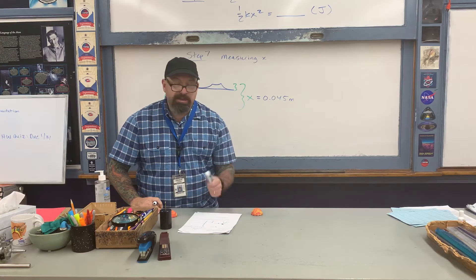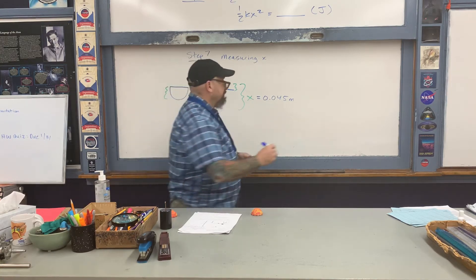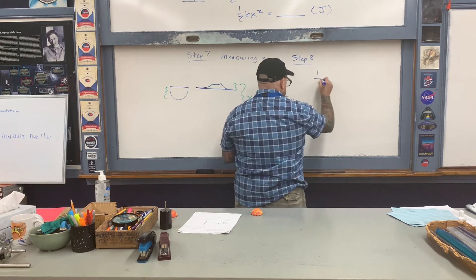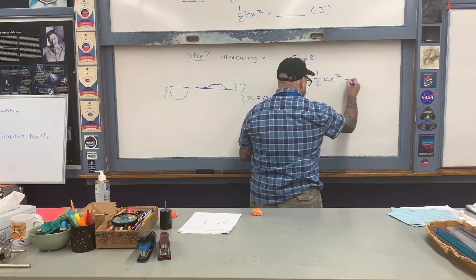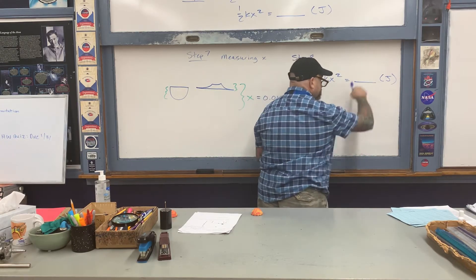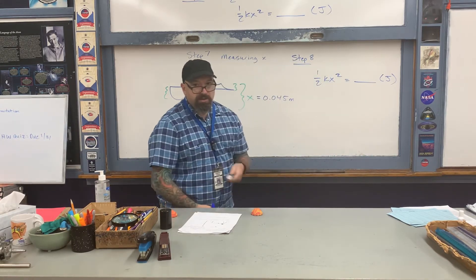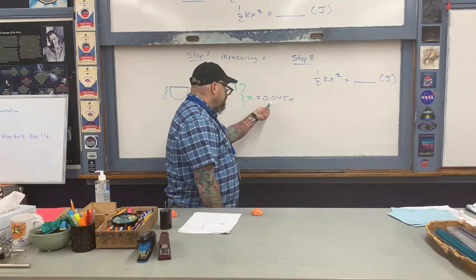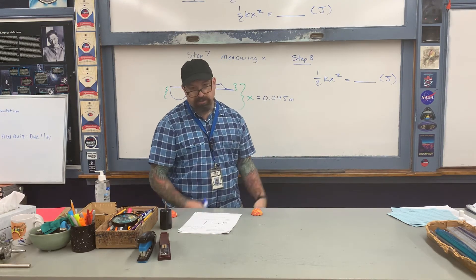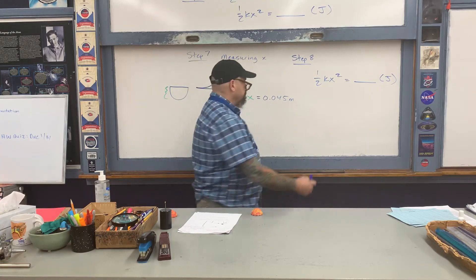The last step, step eight, is just to calculate the spring constant. Let me jump back to this expression where you have one half kx squared equals some number in joules. What you do at this point very simply is plug in the value of x here and solve for the spring constant k. The last step is just a little bit of manipulation, so just solve for k after plugging in the value of x that I've measured.